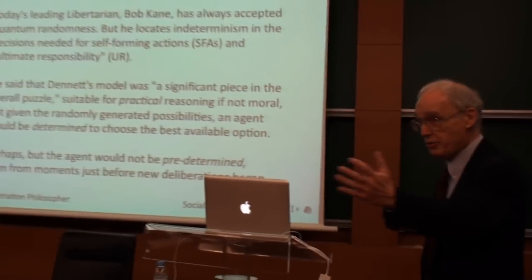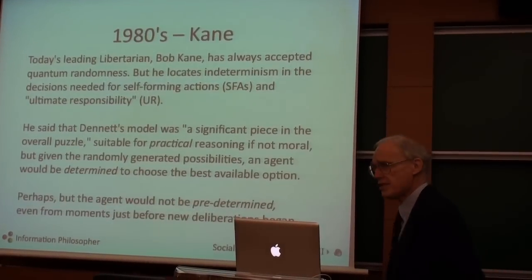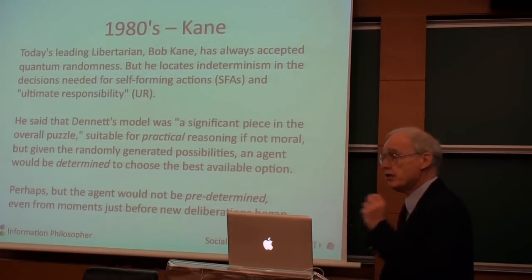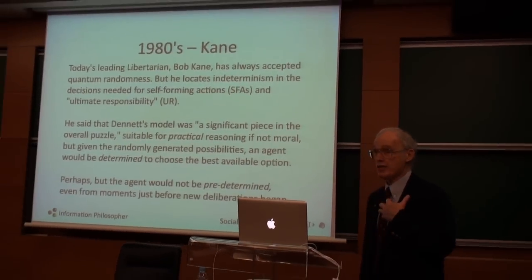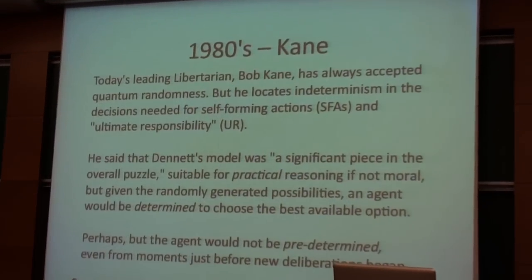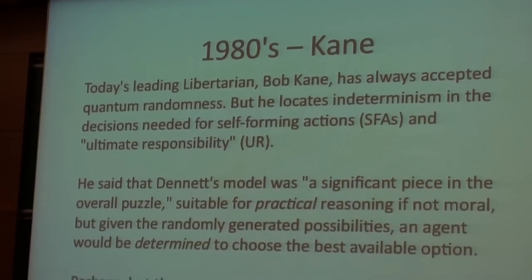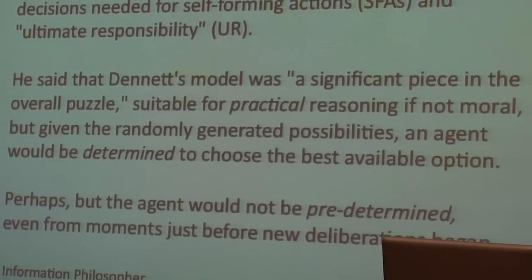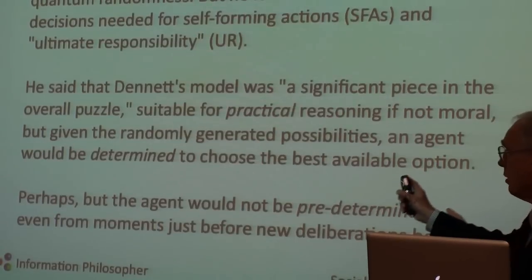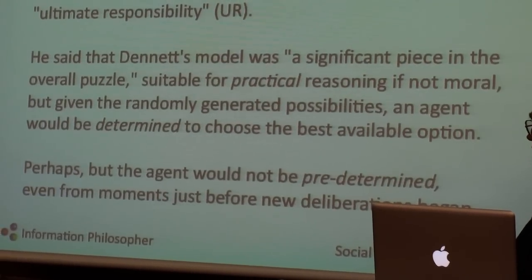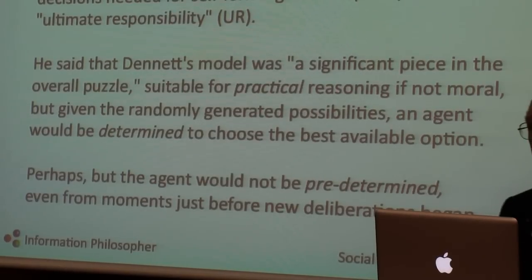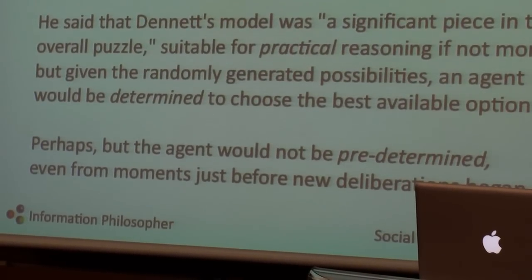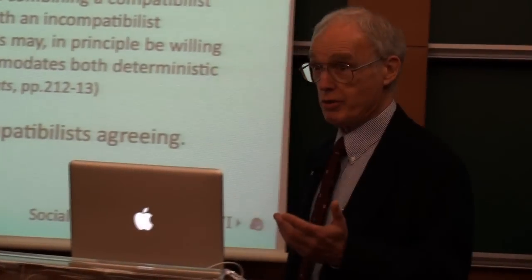Unfortunately, that didn't quite happen. But Bob Kane, who's with us today, is the leading libertarian who has always said quantum mechanics and quantum randomness is a key part of the solution. He locates his indeterminism in decisions needed for his self-forming actions of character and moral responsibility. He said that Dennett's model was a significant piece of the overall puzzle, included it in his 1985 textbook, and has always stressed it as suitable for practical reasoning. Given the randomly generated possibilities of the first stage, an agent would be, quote, 'determined to choose the best available option.' This is the major criticism I always get. Perhaps, I say, but the agent would not be predetermined — not from moments just before deliberations began, and certainly not from the beginning of the universe.